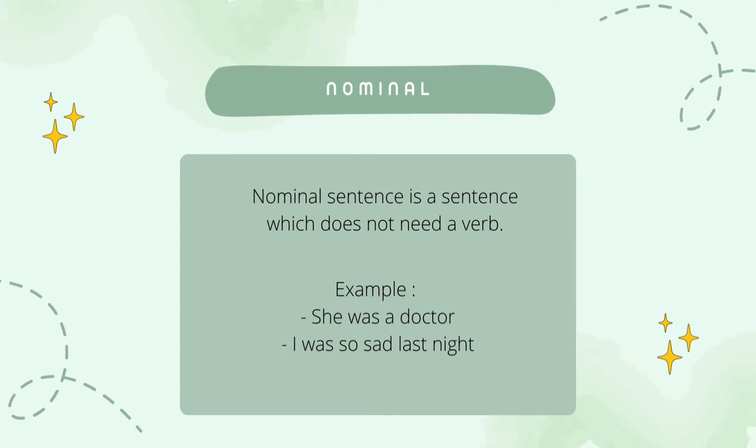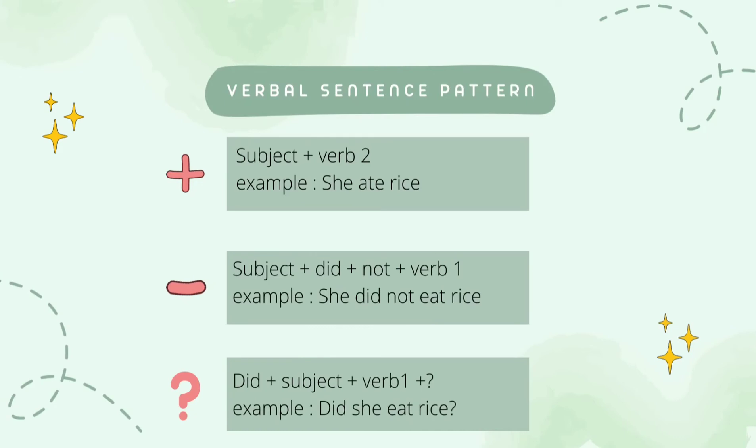Have you understood the difference between verbal sentence and nominal sentence? To understand more, let's learn the simple past tense pattern and sample sentences in more detail. For simple past tense patterns in verbal sentences, you can see more in the following infographic. For positive sentence, the pattern is subject plus verb 2. For example, 'she ate rice.'